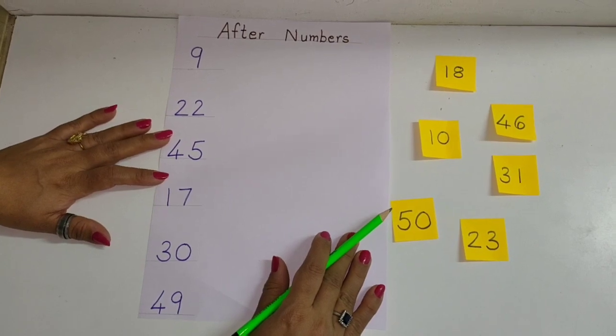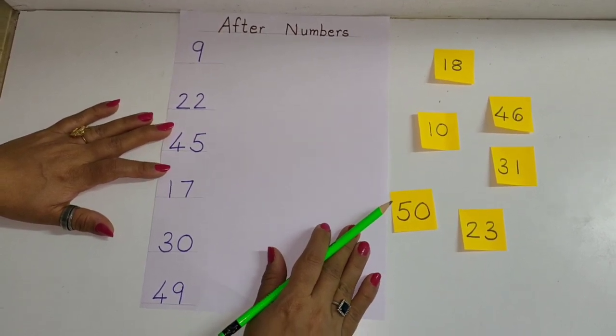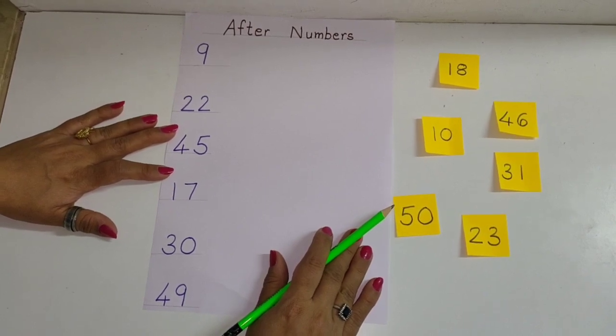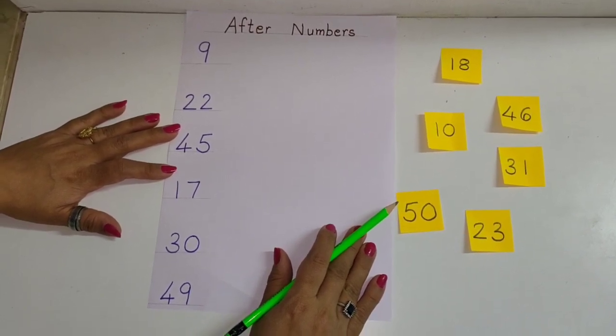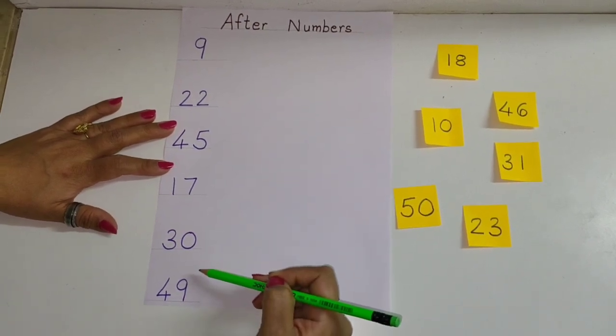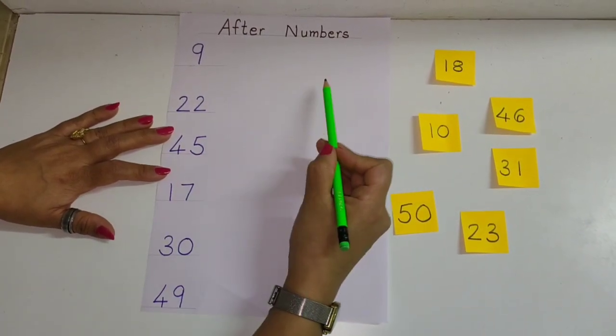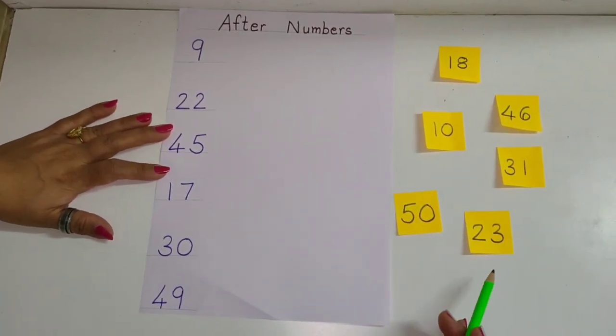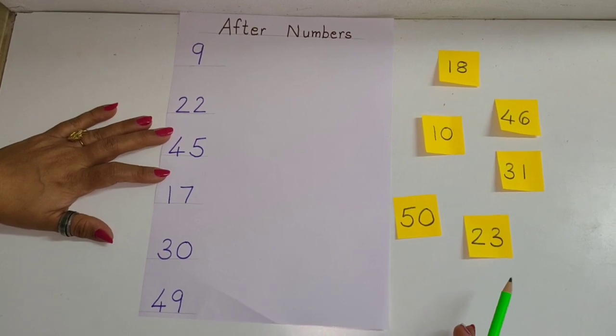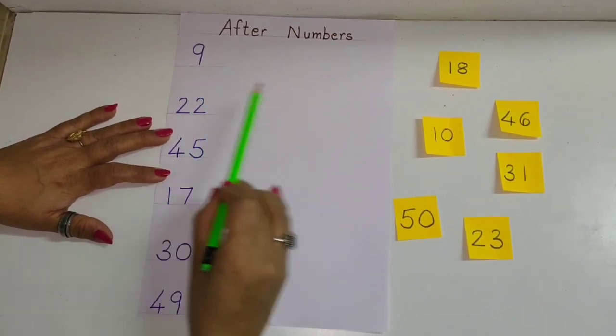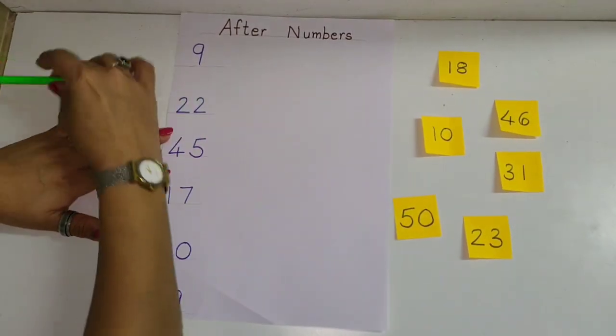Okay children, so I've prepared a small activity here where we can do a quick recap of after numbers with this small activity, which you can do at home as well. You can ask your mama to write some numbers like this on a piece of paper and then you can write the after number with it. Here I have prepared some chits for you and let's begin with the first number.